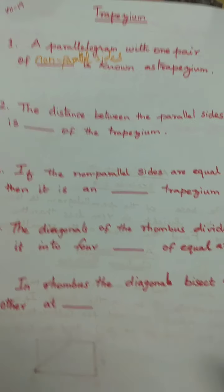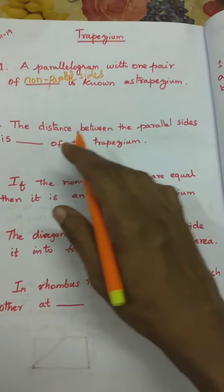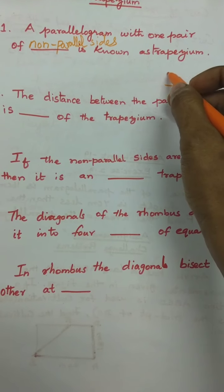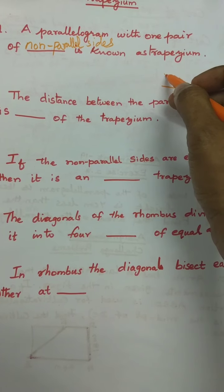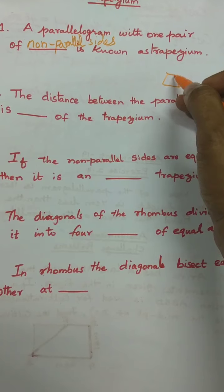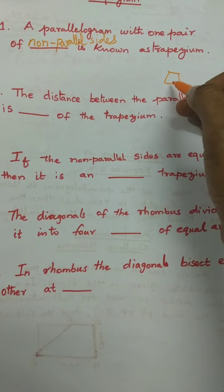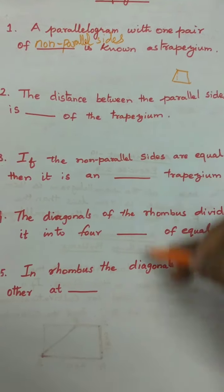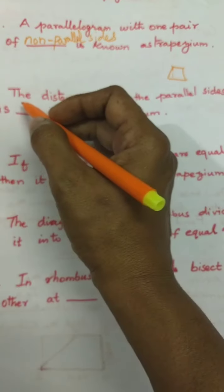The distance between the parallel sides — these two are the parallel sides. The distance between these two parallel sides is known as height.